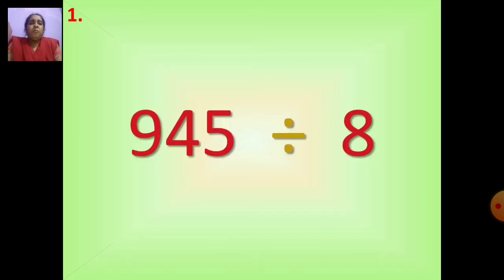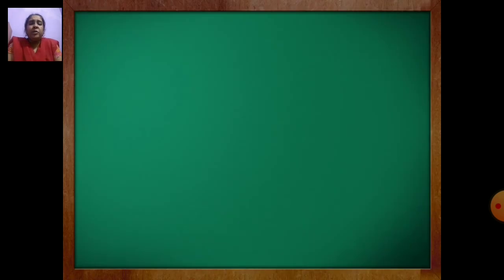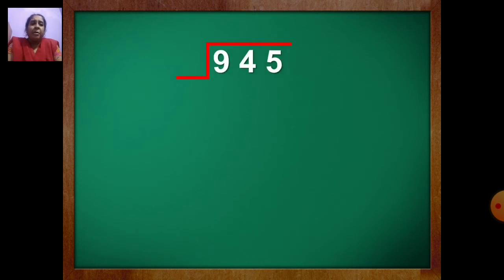Now first question: 945 divide by 8. So now you are going to divide a 3-digit by 1-digit number. You will see how to do division sums. For that, what you have to do first? You have to draw the line, then you will write the number — the bigger number inside. 945 divide by 8.